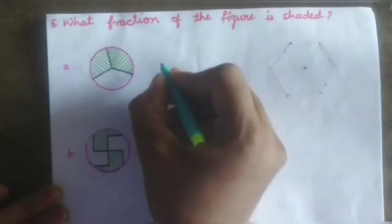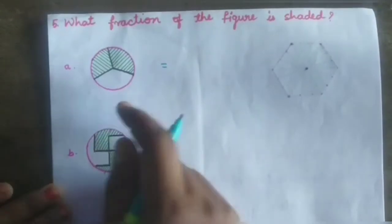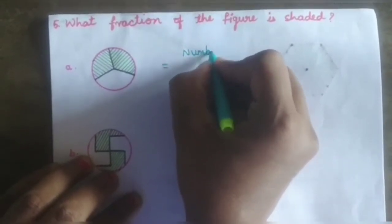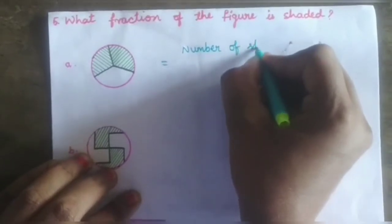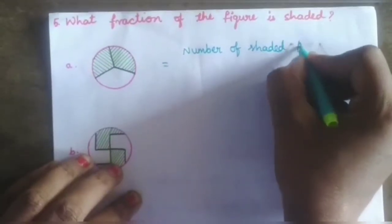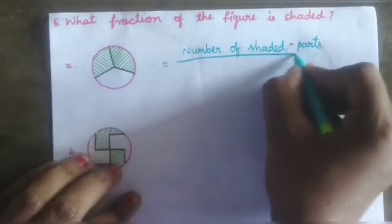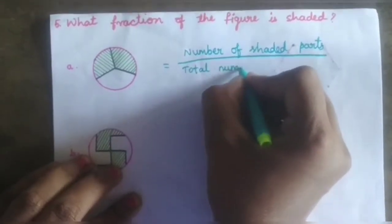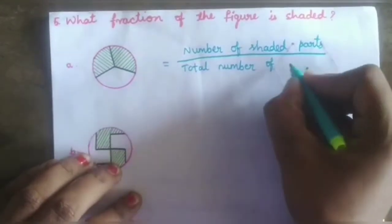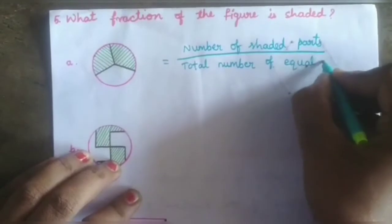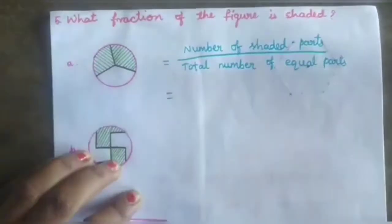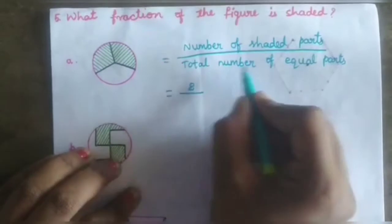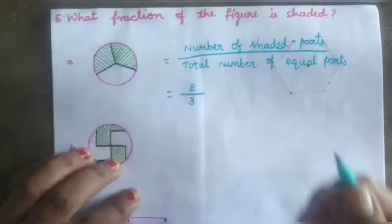First one, figure A. The number of shaded parts goes in the numerator and the total number of equal parts goes in the denominator. The number of shaded parts is 2, and the total number of equal parts is 3. That means the fraction is 2 by 3.